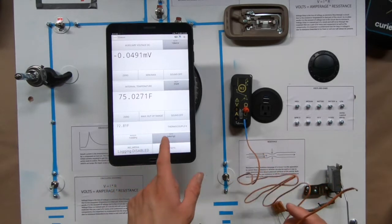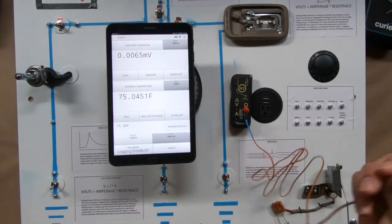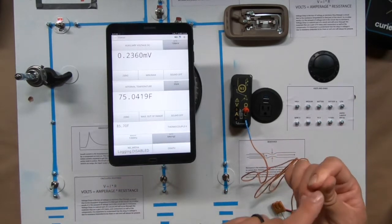Then of course your thermal couple K here is going to be what the actual temperature is of the thermal couple.